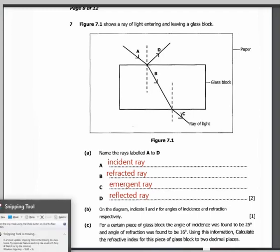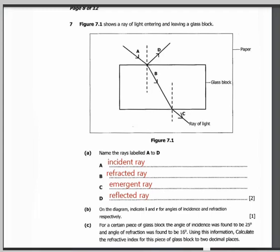Then we go on to part B. On the diagram, indicate I and R for angles of incidence and angle of reflection, respectively.